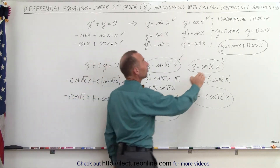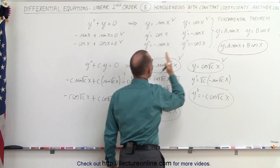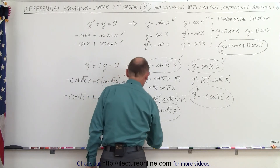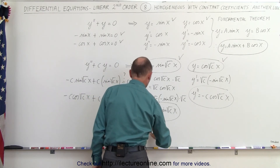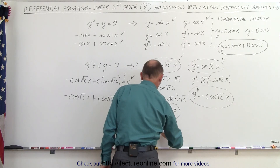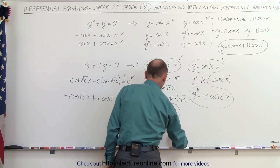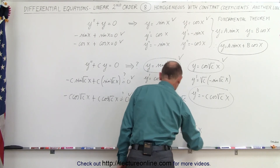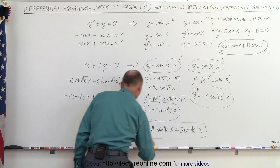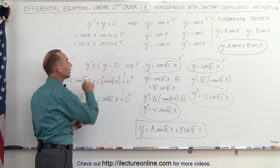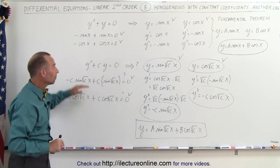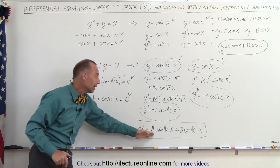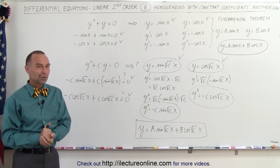Using the fundamental theorem again, we multiply each solution by a constant and add them together. The general solution is y equals a times sine of square root of c times x, plus b times cosine of square root of c times x. This is the general solution to y double prime plus c times y equals zero, and has many useful applications.